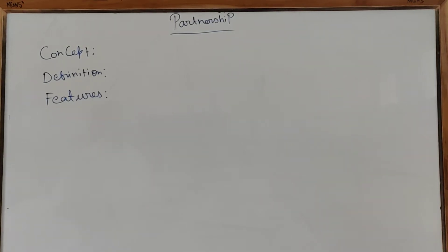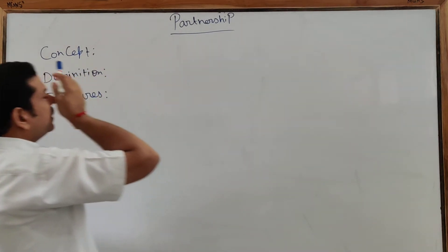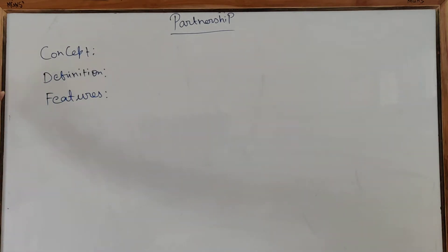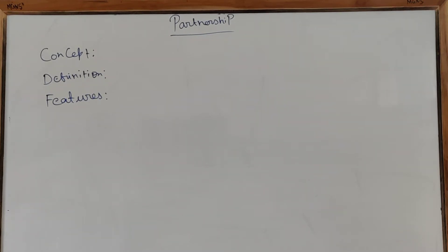Welcome back to the Business Studies class. The chapter going on is Chapter 2: Forms of Business Organization, and today we are going to study the partnership concept. The inherent disadvantages of sole proprietorship — lack of capital, limited skills, and problems in expanding the business — have led to the development of the partnership form.